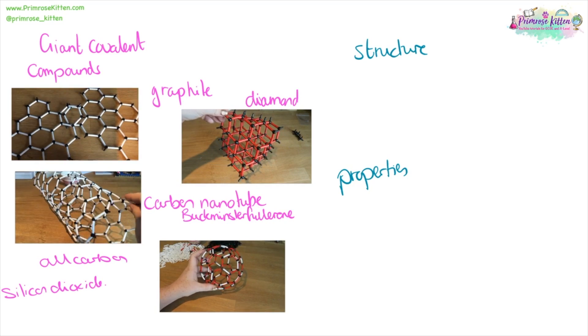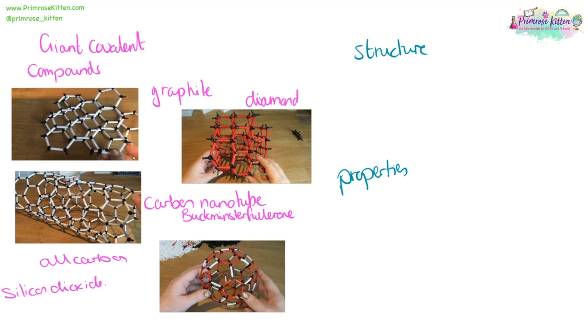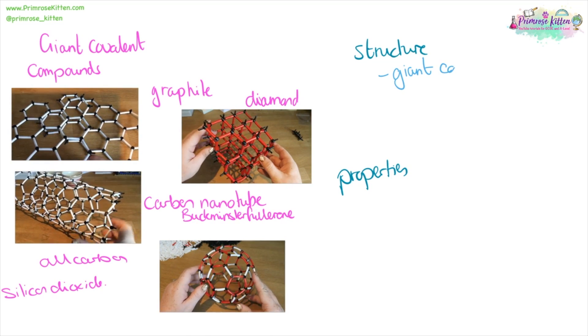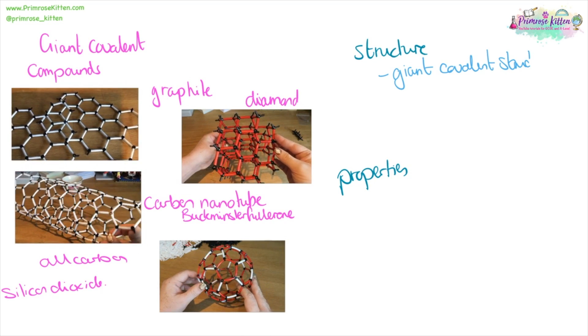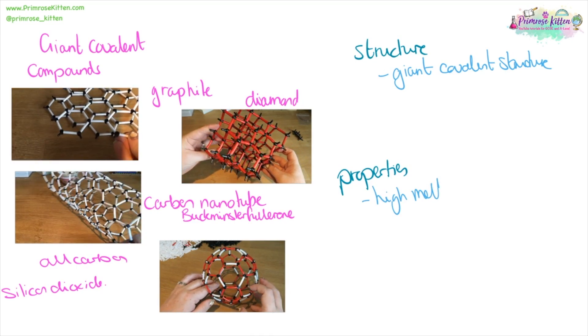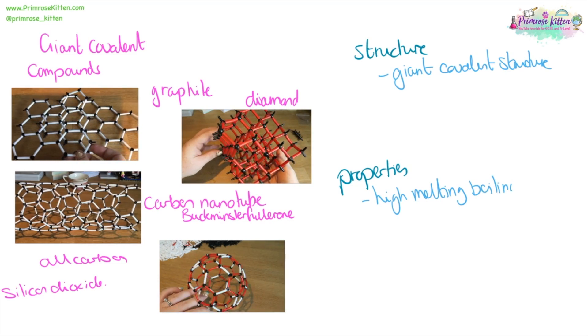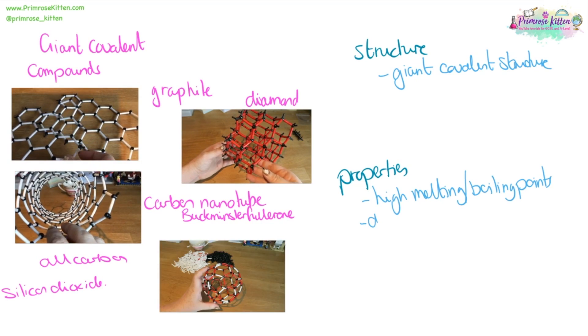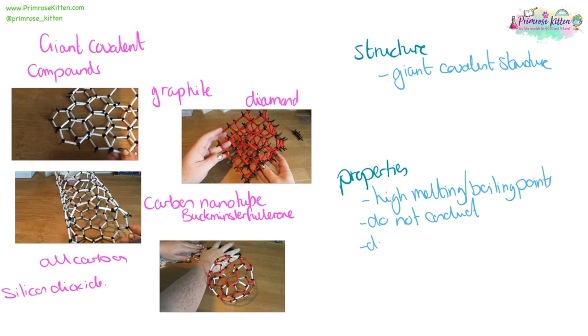For giant covalent compounds, ones made of carbon, such as graphite, diamond, or any fullerenes, or silicon dioxide, they are going to have a giant covalent structure. Their properties are high melting and boiling points. And they do not conduct. And they do not dissolve.